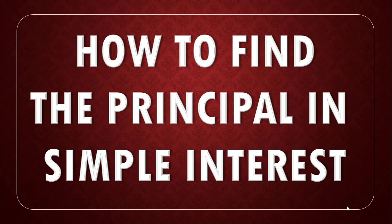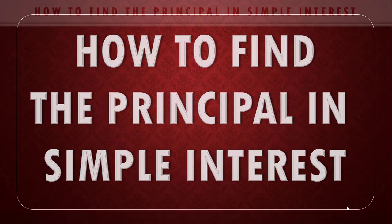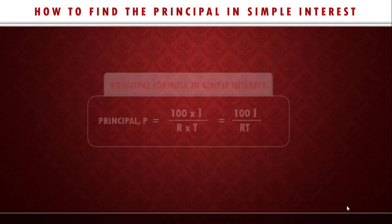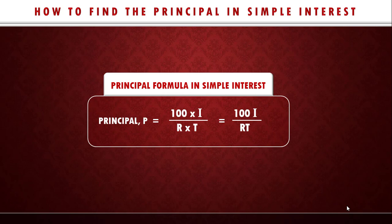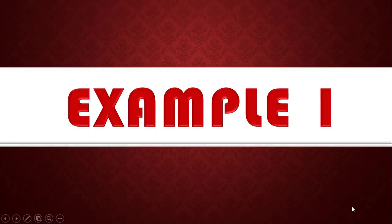In this lesson I'll be showing you how to find principal in simple interest. The principal formula in simple interest is given to be: Principal equals 100 times I over R times T. We can also write this as P = 100I over RT, where I stands for interest or simple interest, R stands for rate, and T stands for time.